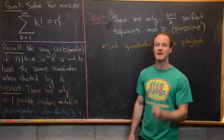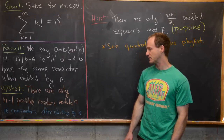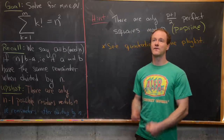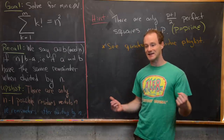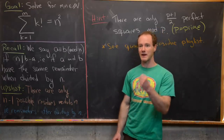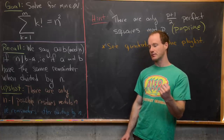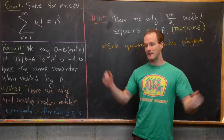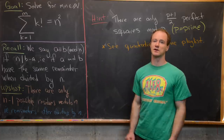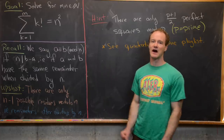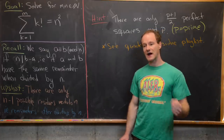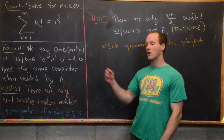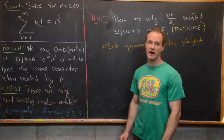By residues, we mean the actual remainders after dividing by n. For instance, if you divide by 6, you can have a possible remainder of 0 — which means you're divisible by 6 — 1, 2, 3, 4, or 5. That makes 6 total numbers. And that's true for any value of n: if you divide by n, you can have a remainder of 0, 1, 2, all the way up to n minus 1.